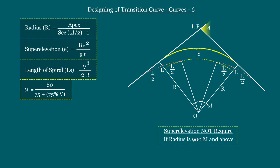The sixth step is to find the value of shift, because this shift value helps to calculate the total tangent length of the transition curve. The formula to calculate the shift is l²/(24r), where l is the length of the spiral curve and r is the radius of the circular curve.